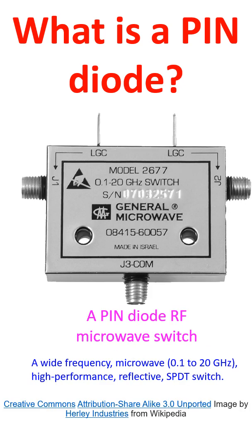As the PIN diode has low capacitance under zero bias or reverse bias, it will not pass much of an RF signal. With a forward bias current of 1 mA, a PIN diode has an RF resistance of about 1 ohm. This can be considered as the ON state, and thus a PIN diode can function as a good RF switch.